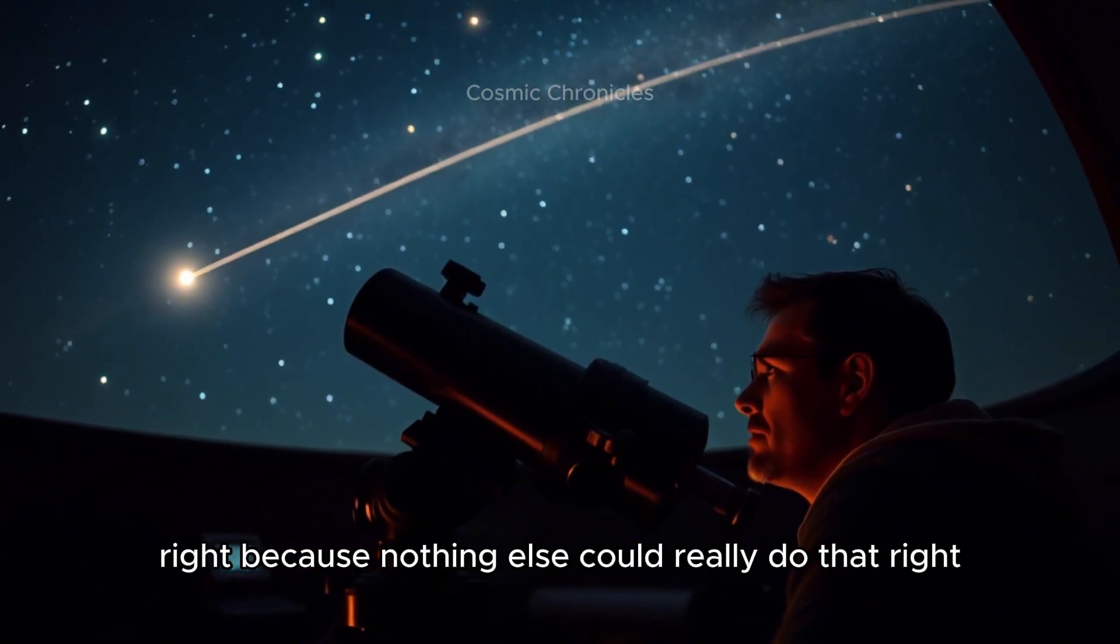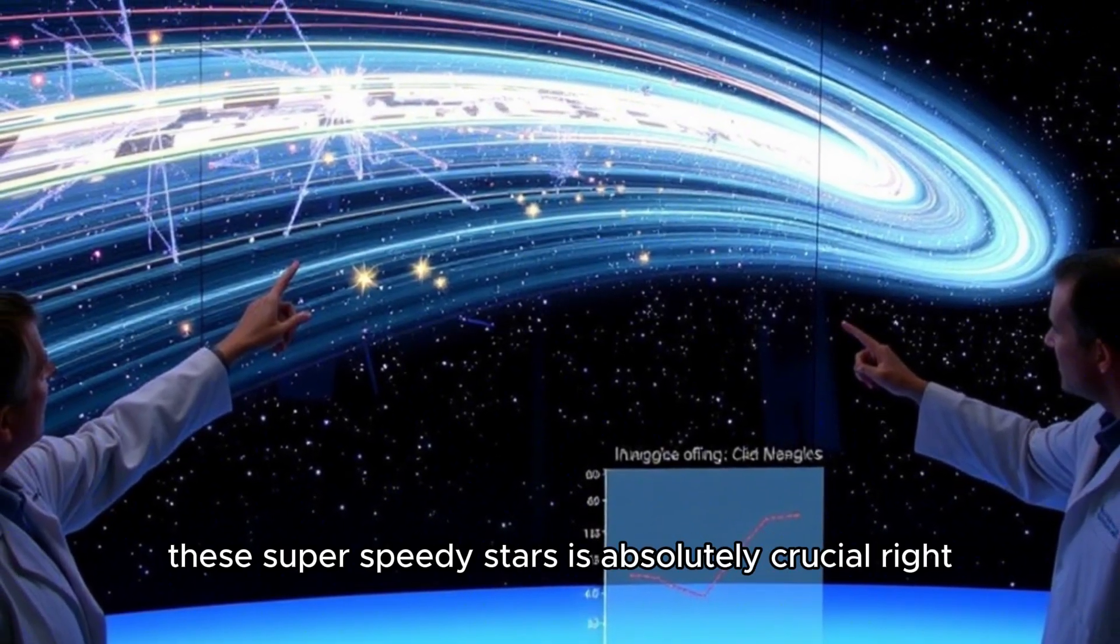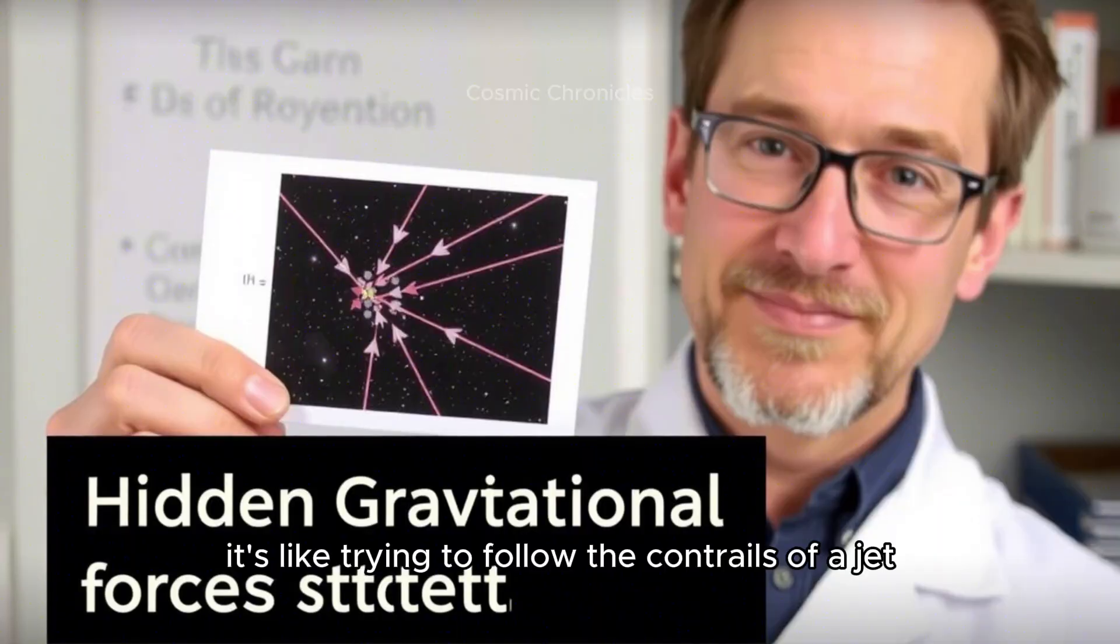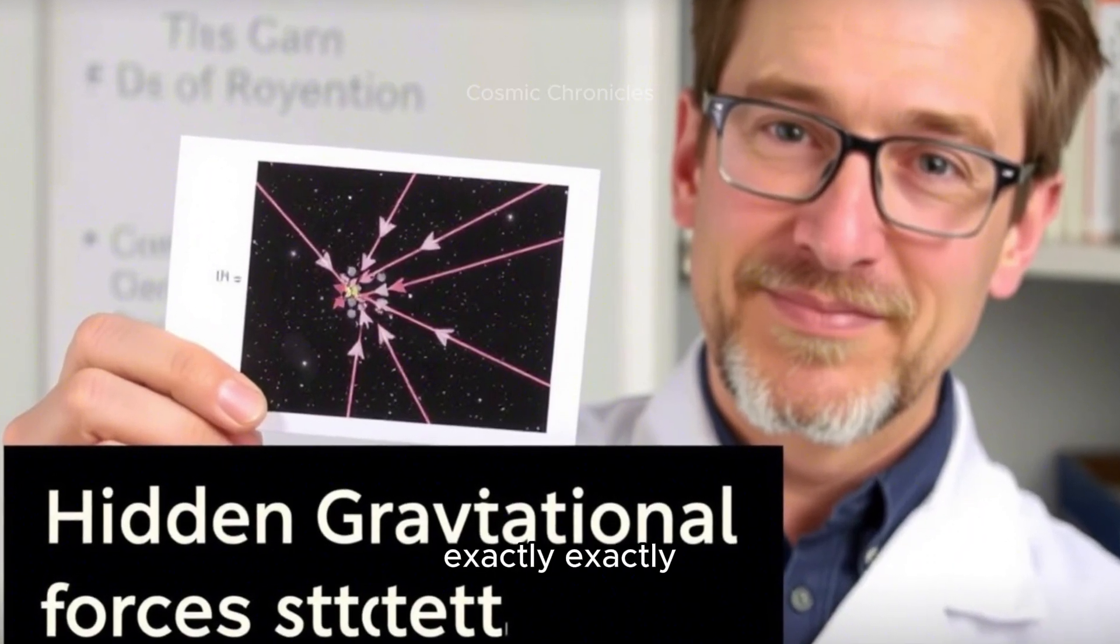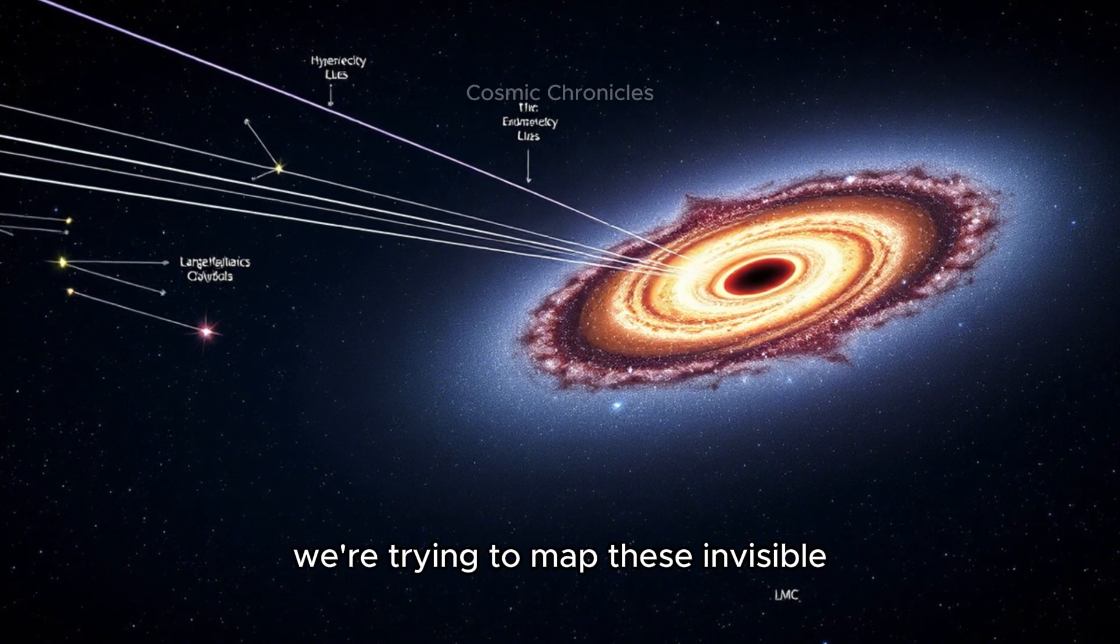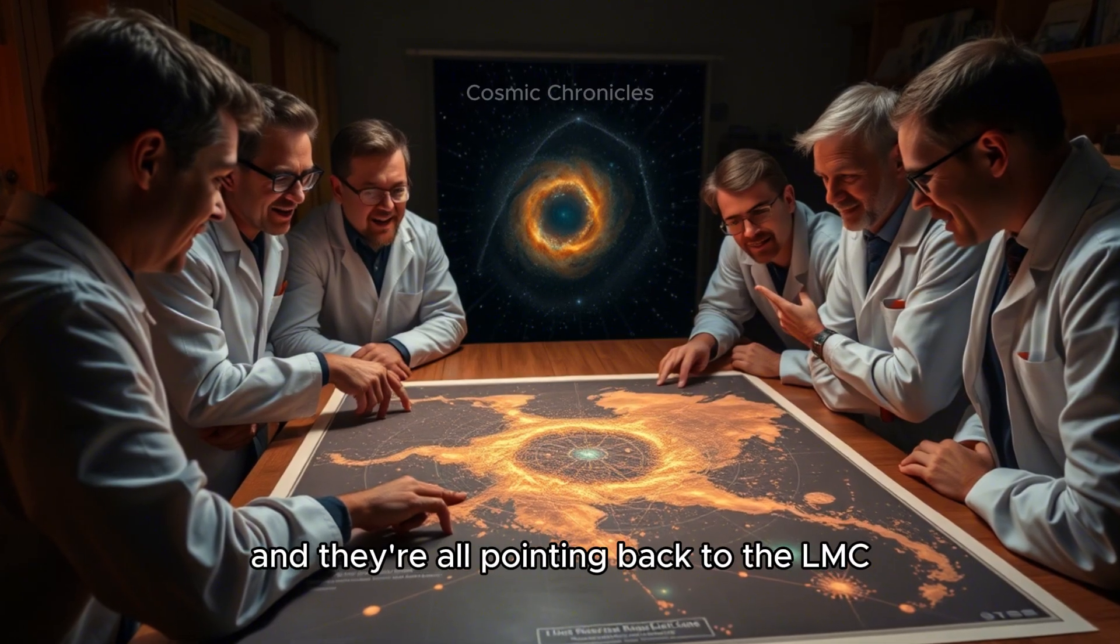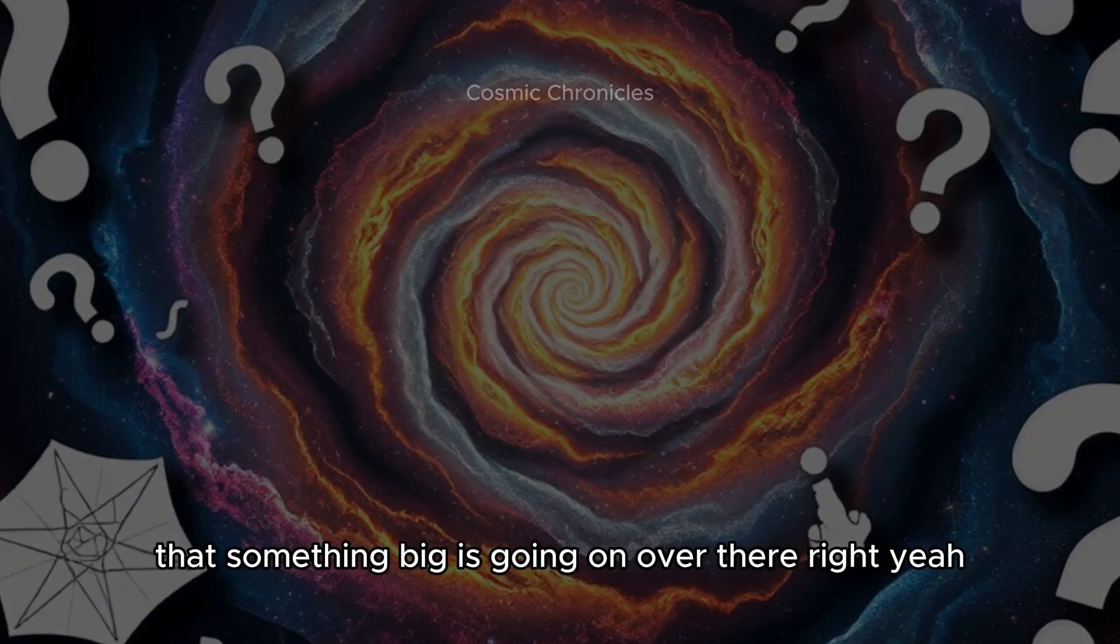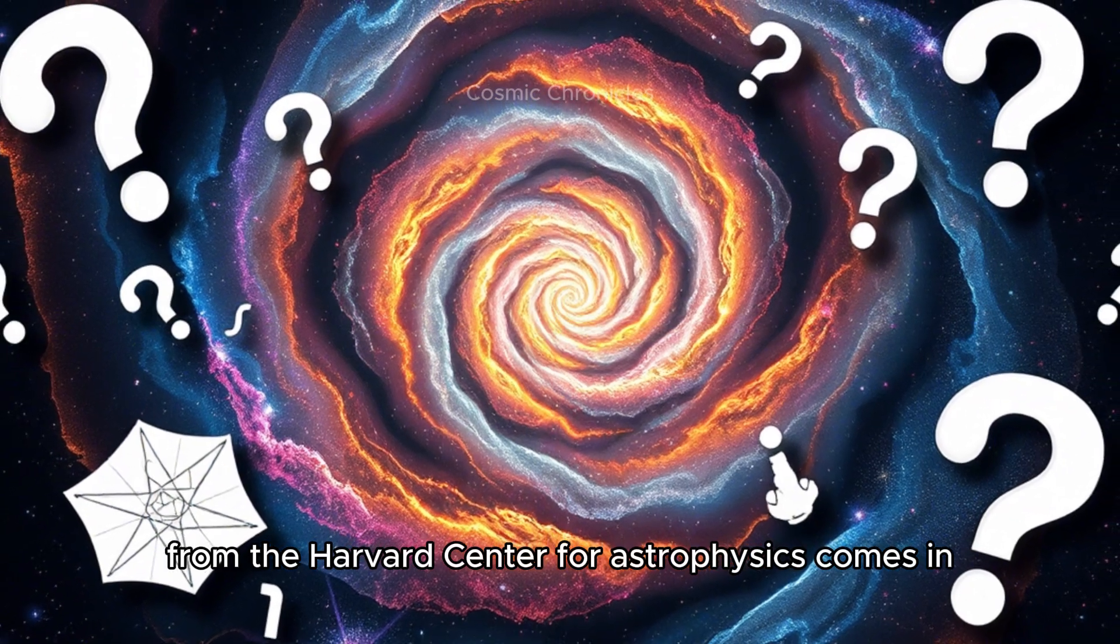If we're finding hypervelocity stars in our Milky Way but their paths are like breadcrumbs leading back to the LMC, then that points to a really strong gravitational source within that dwarf galaxy. And given those crazy speeds, a supermassive black hole becomes the most likely suspect. Tracing the paths of these super speedy stars is absolutely crucial - it's like trying to follow the contrails of a jet back to where it took off from. It's like cosmic detective work. We're trying to map these invisible gravitational forces.